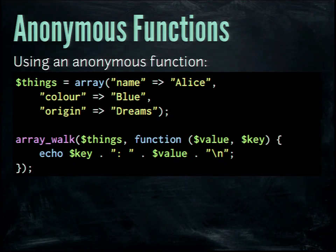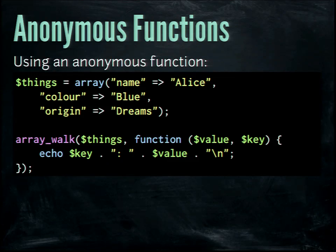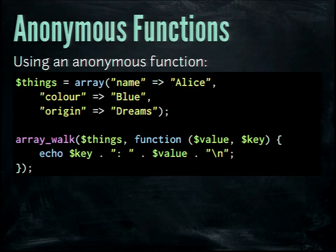Today the code would look like this: the array is the same. When I call array_walk, instead of passing the name of the function or another callable thing, I can just declare in the place where it's going to be used the function that applies here. So it allows us to do very neat one-off pieces of functionality just in the place where they are needed without having to give them names and polluting our namespace. We can also declare these anonymous functions and assign them to variables, pass them as arguments, take this little piece of functionality and inject it as a dependency to some other code.